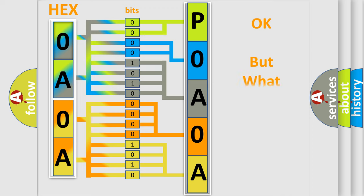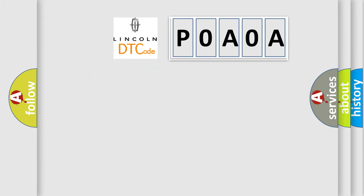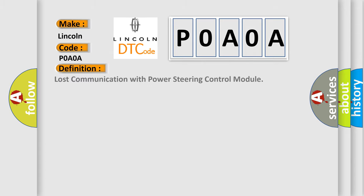The number itself does not make sense to us if we cannot assign information about what it actually expresses. So, what does the Diagnostic Trouble Code POAOA interpret specifically for Lincoln car manufacturer? The basic definition is: Lost communication with power steering control module. And now this is a short description of this DTC code.